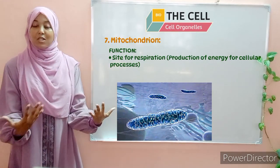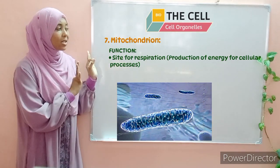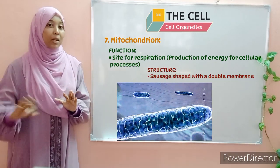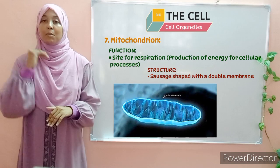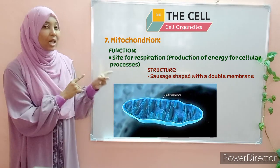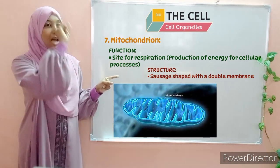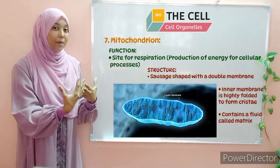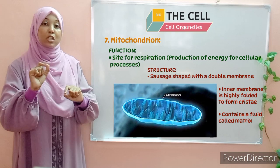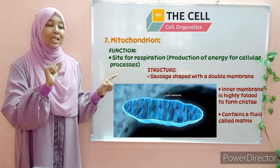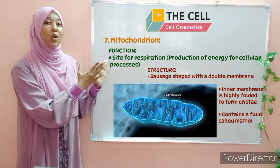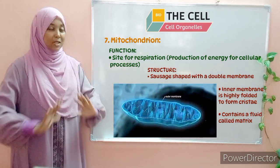What about the structure? The mitochondrion has a distinctive structure. It is sausage-shaped and it has a double membrane — an outer membrane and an inner membrane. If you look at the inner membrane, you'll note that it is highly folded to form projections known as cristae. Within the mitochondria, we also have a fluid called the matrix.